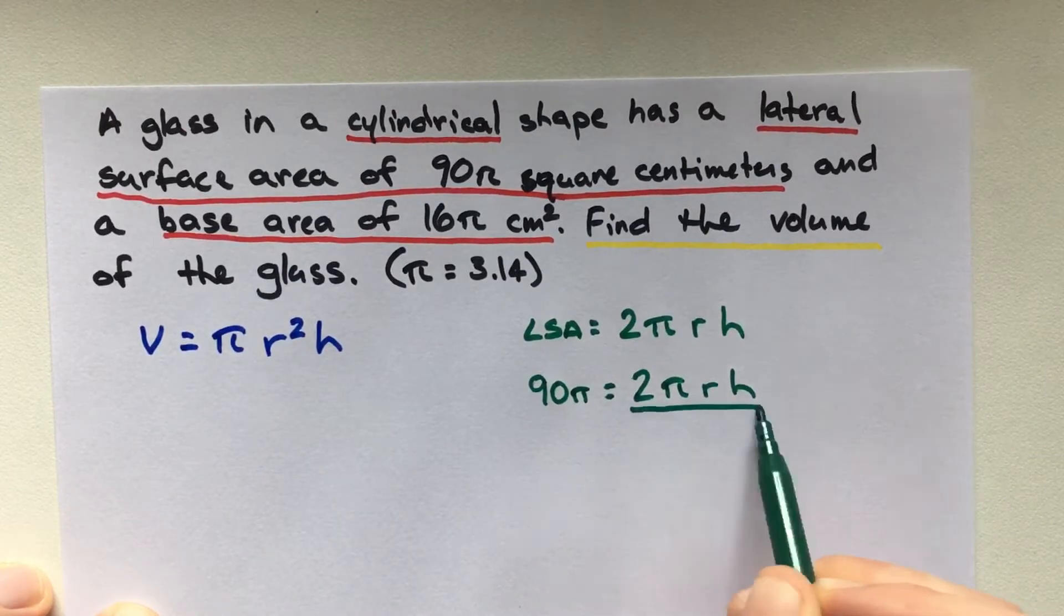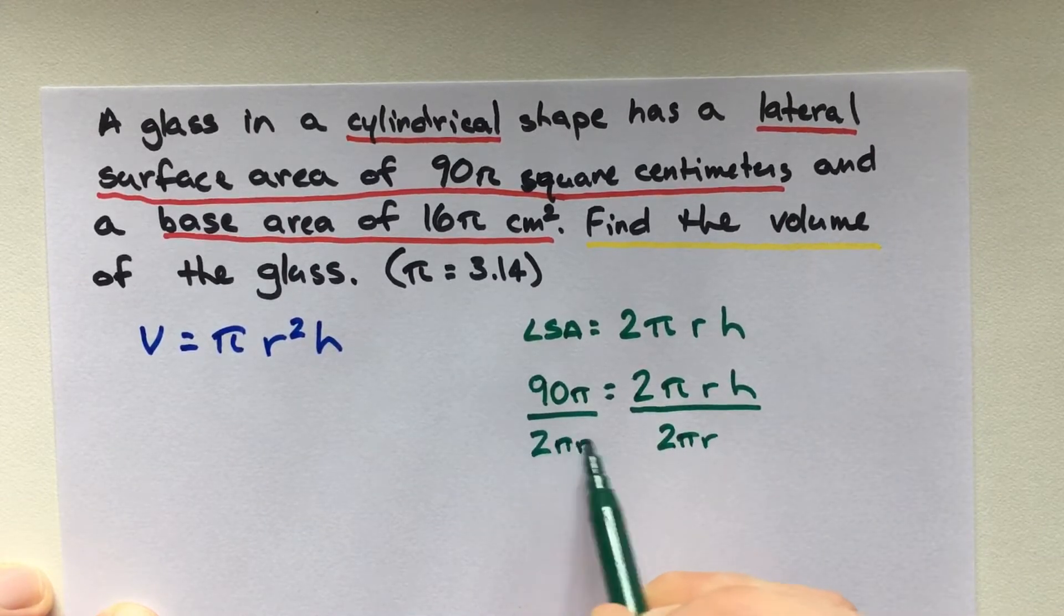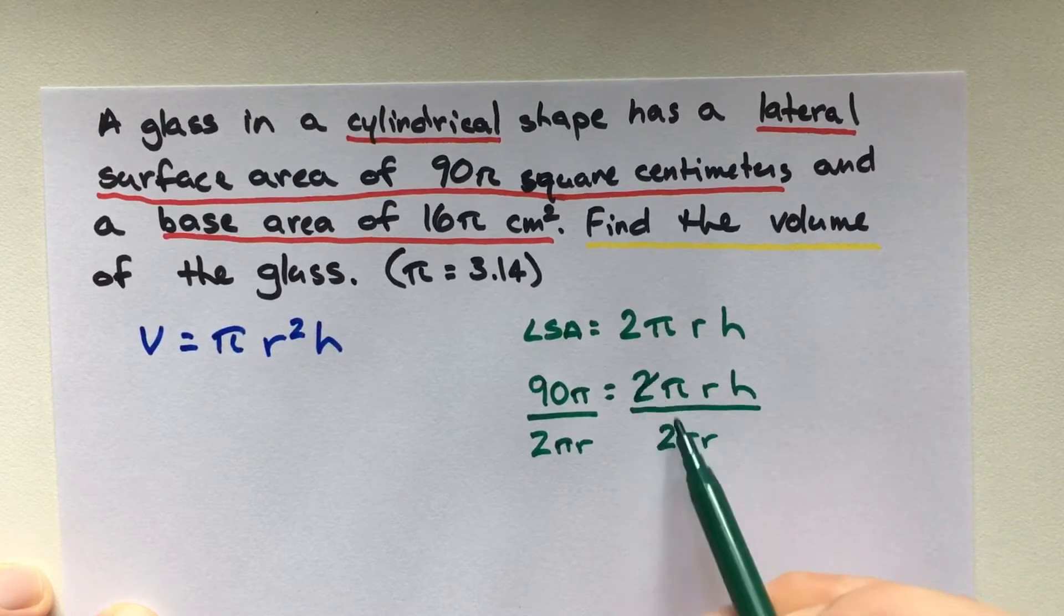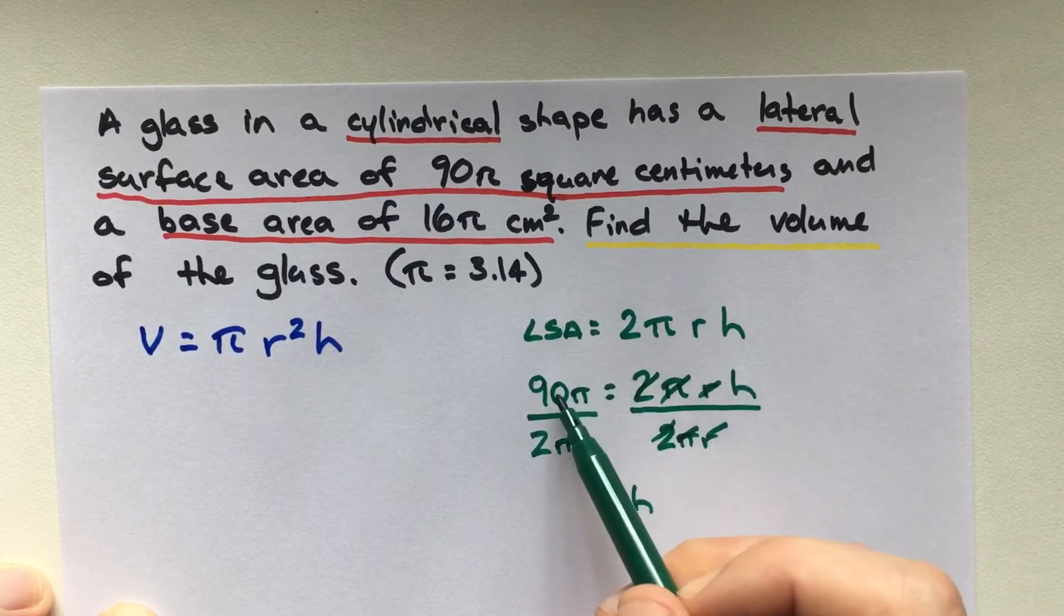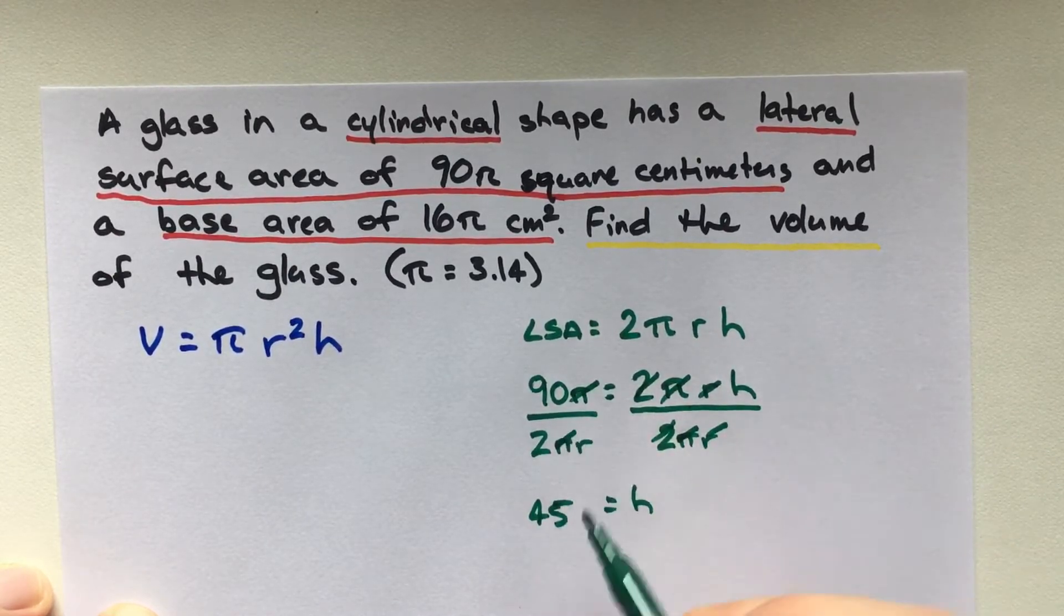So we can divide both sides by 2πr. These are going to cancel. And we're left with h equals 90 over 2, which is 45. π cancels with π, so h = 45/r.